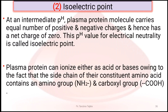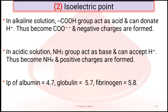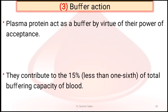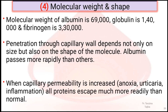The isoelectric point is the intermediate pH at which plasma protein molecules carry an equal number of positive and negative charges, giving a net charge of zero. Plasma proteins can ionize as either an acid or base, due to amino and carboxyl groups in their constituent amino acids. The isoelectric point for albumin is about 4.7, for globulin about 5.7, and for fibrinogen about 5.8. Buffer action: plasma proteins act as buffers by virtue of their power of acceptance of ions. Molecular weight: albumin is about 69,000; globulin about 140,000; fibrinogen about 33,000.